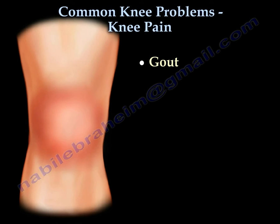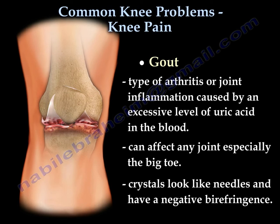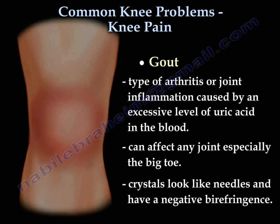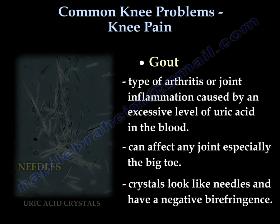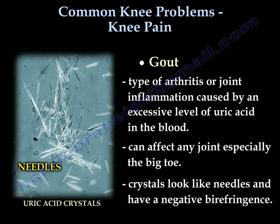Gout is an inflammatory arthritis caused by excessive levels of uric acid. It can affect any joint in the body, especially the big toe. The crystals look like needles and have negative birefringence.